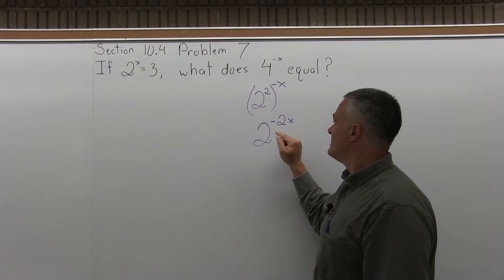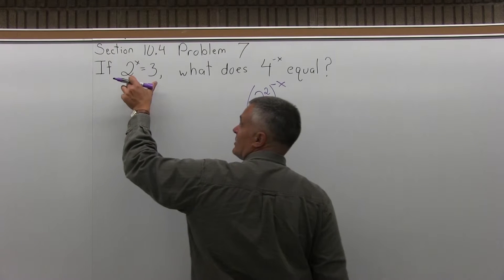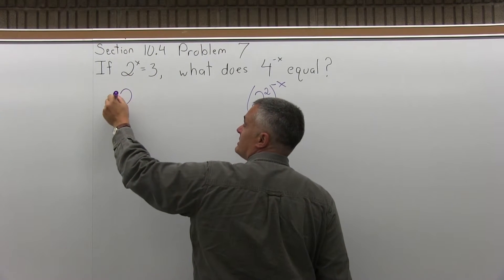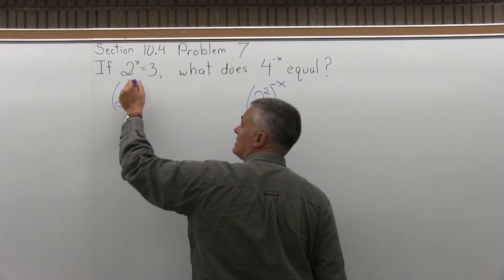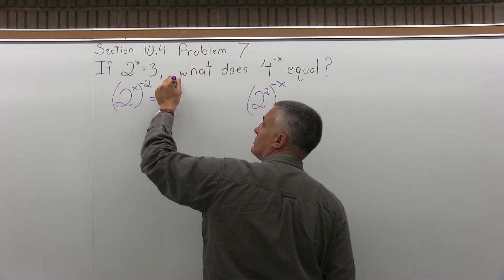What's different is I'm looking for 2 to the negative 2x. Well, I can take the equation that's given, 2 to the x equals 3, and raise both sides to the negative 2 power. I'll have 2 to the x to the negative 2 power equals 3 to the negative 2 power.